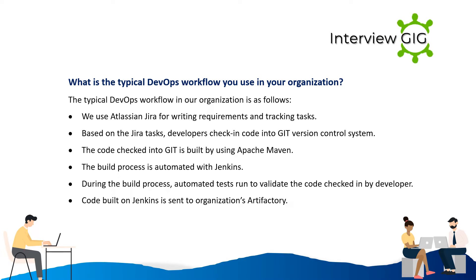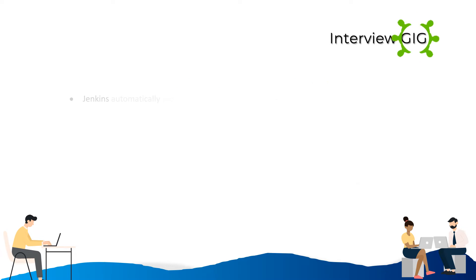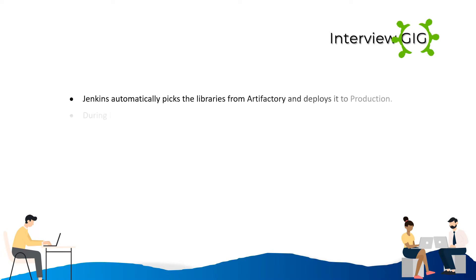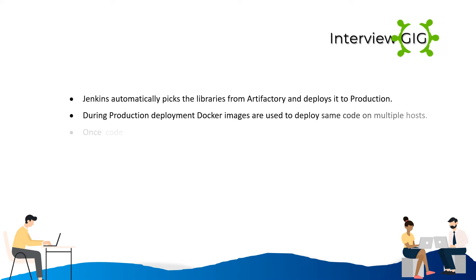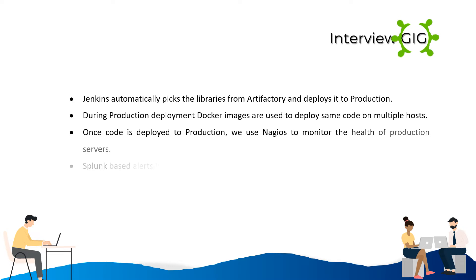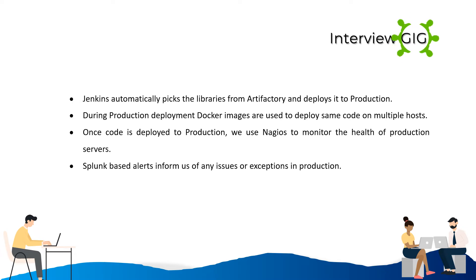Code built on Jenkins is sent to the organization's Artifactory. Jenkins automatically picks the libraries from Artifactory and deploys to production. During production deployment, Docker images are used to deploy the same code on multiple hosts. Once code is deployed to production, we use Nagios to monitor the health of production servers, and Splunk-based alerts inform us of any issues or exceptions in production.